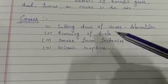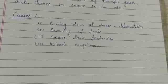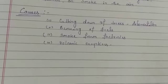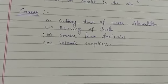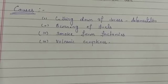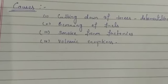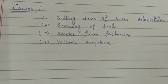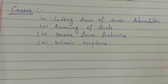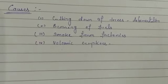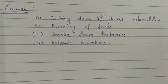Burning of fuels such as coal, petrol, and diesel in vehicles and factories adds poisonous gases to the air and causes air pollution. Smoke coming out from factories adds harmful gases like carbon dioxide into the air. Burning of firecrackers, garbage, and stubble is another cause of air pollution, as they also release harmful gases.